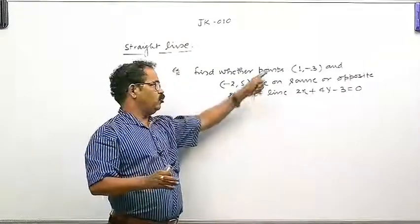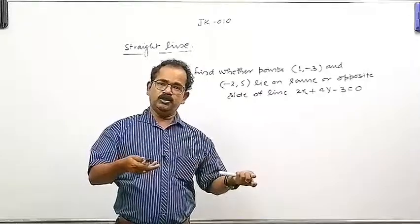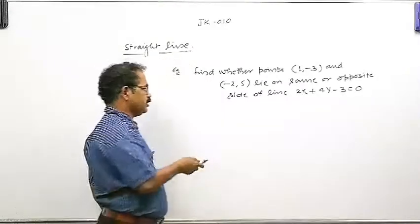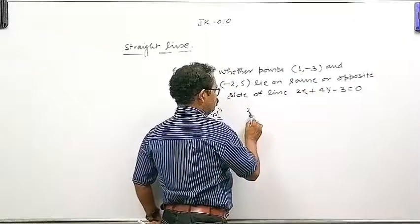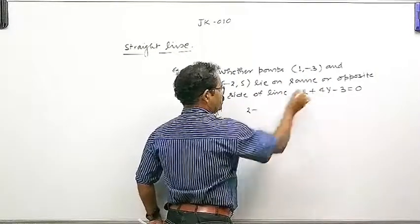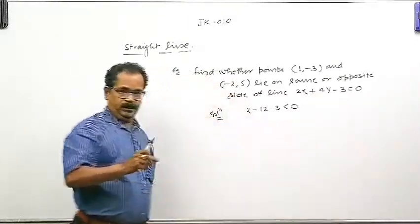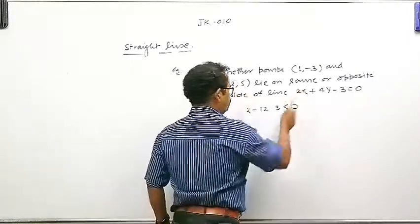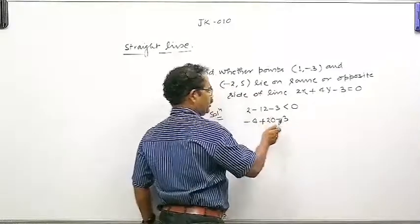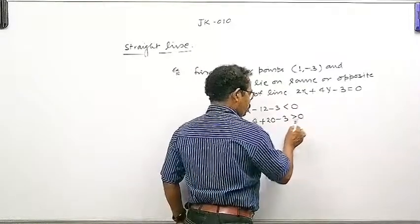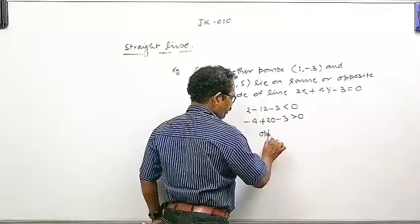Simply हमको वो points put करने हैं. If we get opposite signs, they lie on opposite sides; if same sign, then same side. Solution: putting (1, -3): 2(1) plus 4(-3) minus 3 = 2 minus 12 minus 3, it is coming negative. Now putting (-2, 5): 2(-2) plus 4(5) minus 3 = -4 plus 20 minus 3 = 13, it is positive. एक से negative आया, दूसरे से positive means ये opposite sides पर हैं.